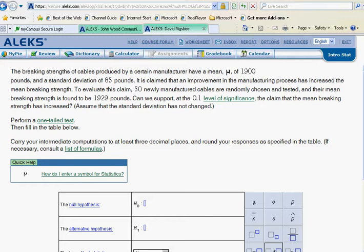There's a lot to this, and most likely what I'm going to do here is to break this video into two parts because it is so long. So let's begin by reading the problem. The breaking strengths of cables produced by a certain manufacturer have a mean mu of 1,900 pounds and a standard deviation of 85.